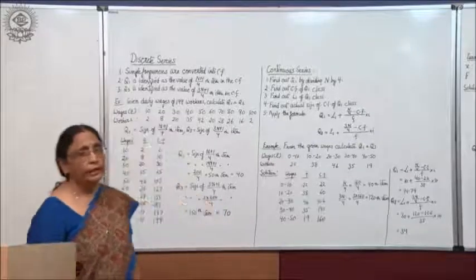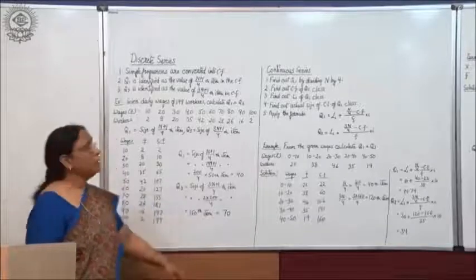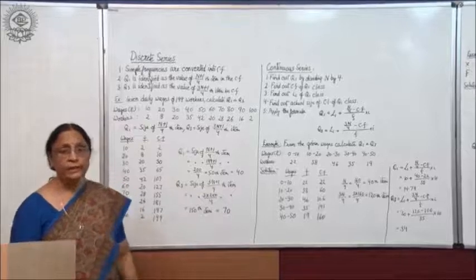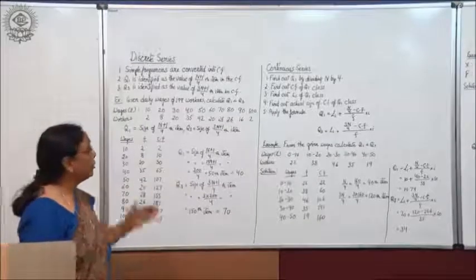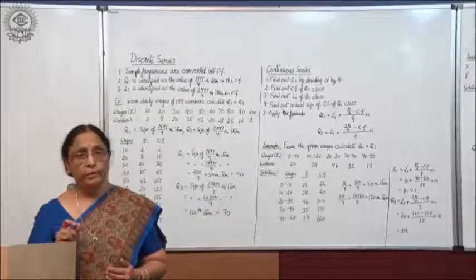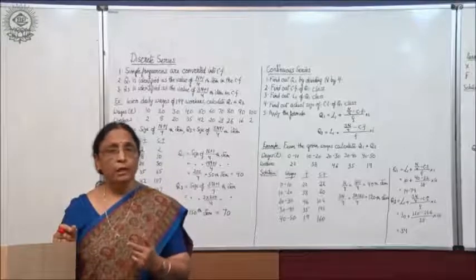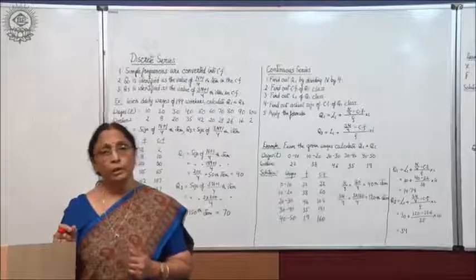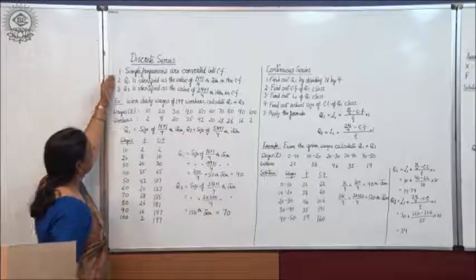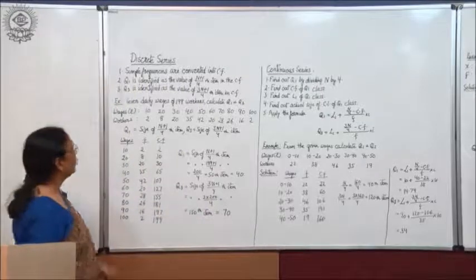After learning the calculation of quartiles in individual series, we move to discrete series. This is the second series — discrete series — in which the frequency is given. Discrete series is grouped data in which frequencies are given along with the items. In the discrete series, these are the steps you are supposed to follow to calculate quartiles.